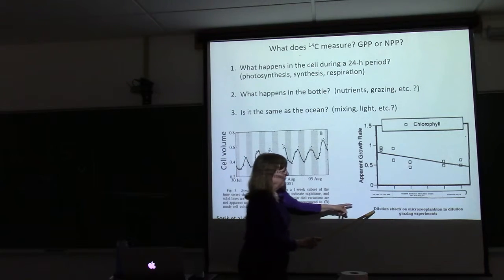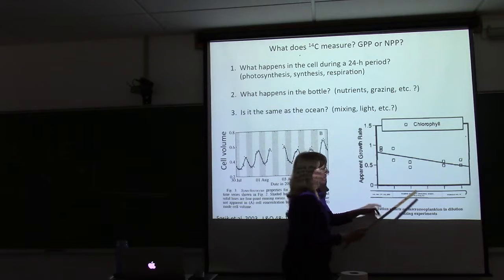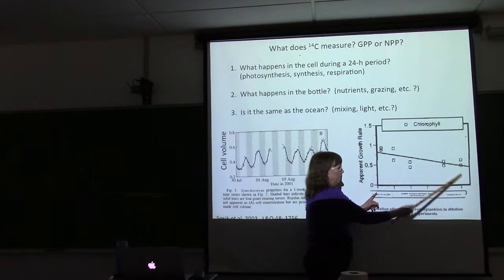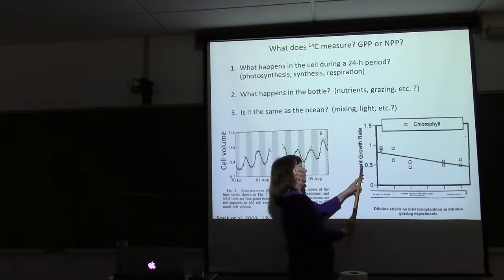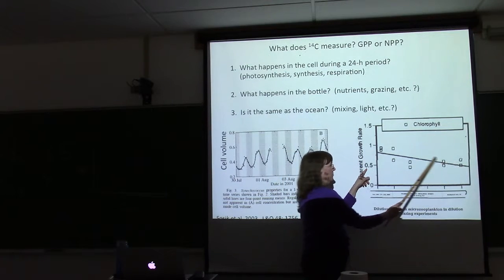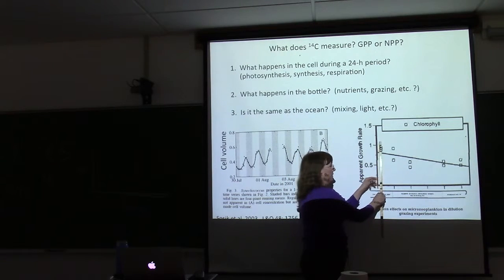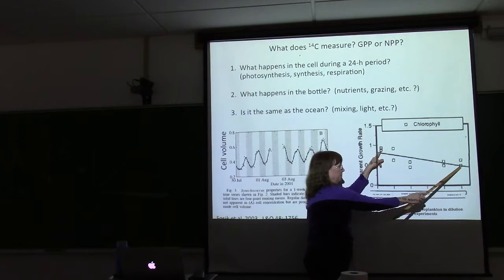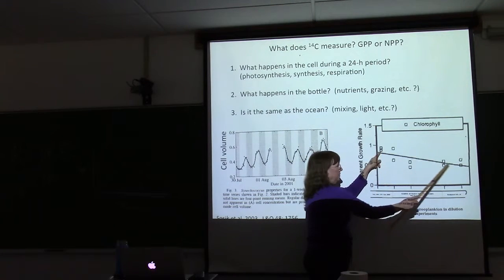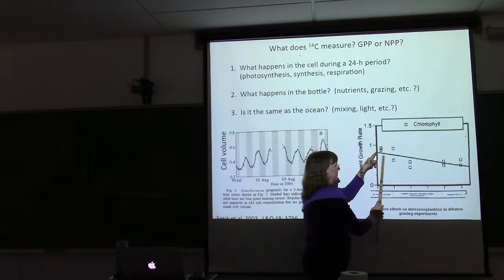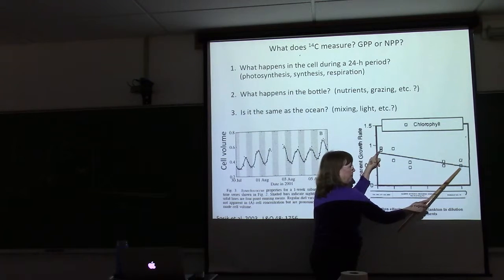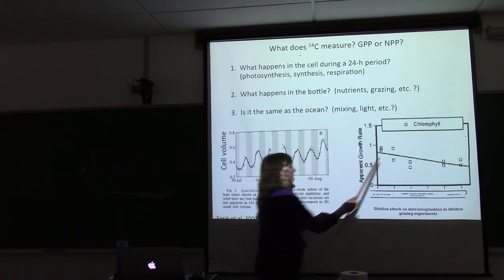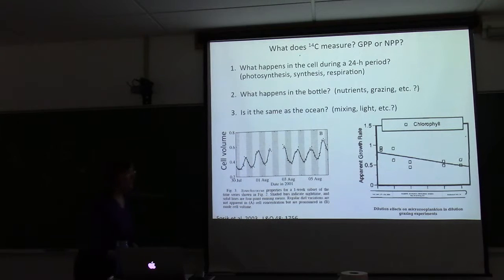And the other thing, and this goes back to the bottle effect, if you take full strength seawater and measure the growth rate of phytoplankton, and if you dilute it, so you're diluting the grazers, you find that there's a difference in the apparent growth rate. And that's because this is true growth rate, this is true growth rate minus grazing predation. I throw that up there just as an example of one of the things that happens in a bottle.